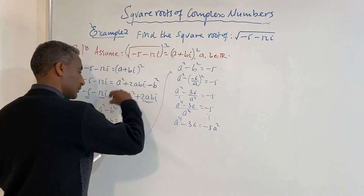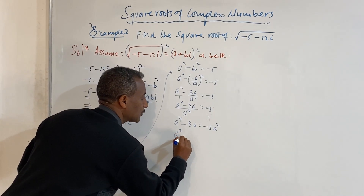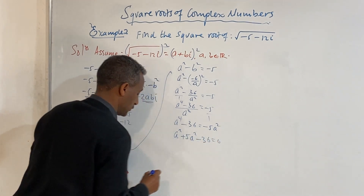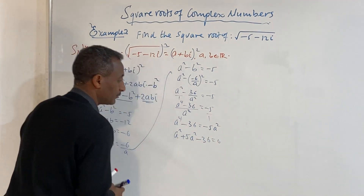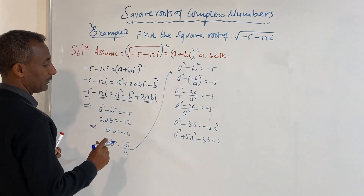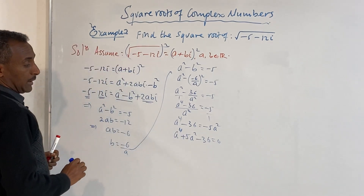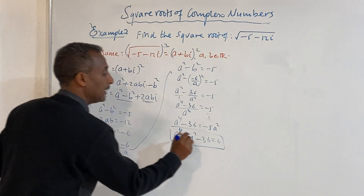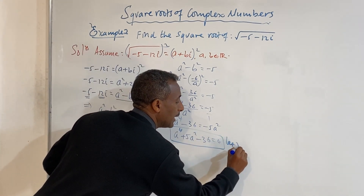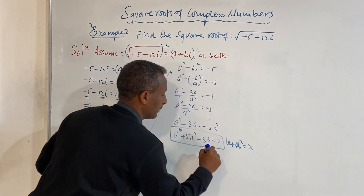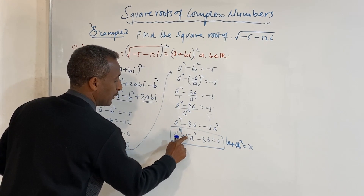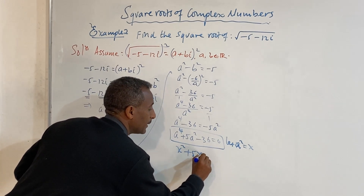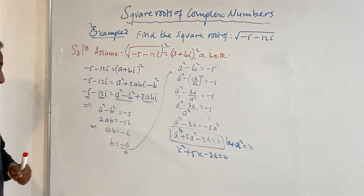Transferring terms to the left side, we get the polynomial a to the power of 4 plus 5a squared minus 36 equals zero. Let x equal a squared, so this becomes x squared plus 5x minus 36 equals zero, which factors as (x + 9)(x - 4) equals zero.